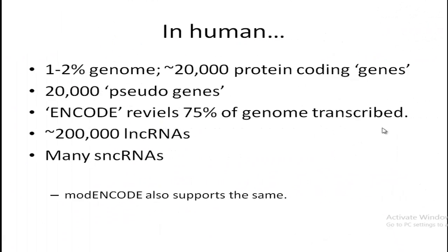Recent discoveries reveal one of the non-coding RNAs is competitive endogenous RNA (ceRNA) and the large-scale transcriptome regulatory network ceRNET. The ENCODE project reveals that only one to two percent of our genome is protein-coding genes — approximately 20,000 genes — and nearly 20,000 pseudogenes are found as well. These pseudogenes are transcribed and translated but they stop due to premature stop codons or frameshift mutations. More than 75 percent of our genome is transcribed, even though only one to two percent contains protein-coding genes. There are nearly 200,000 long non-coding RNAs in the transcriptome.